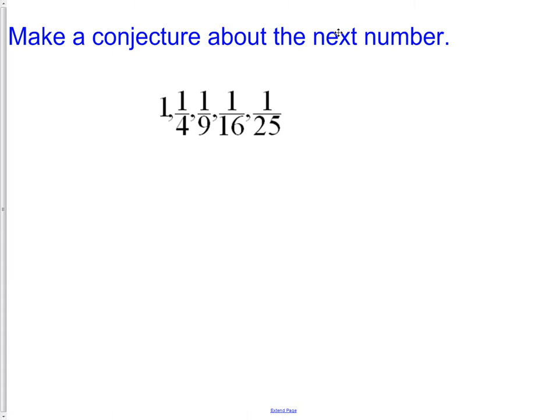Make a conjecture what you think is going to be the next fraction. If you said one 36th, you would be correct. In this case, the top of the fraction is staying one every time. The bottom of the fraction is our first six numbers squared. So we have one squared, two squared, three squared, four squared, five squared, and finally six squared for our last term that we just added.